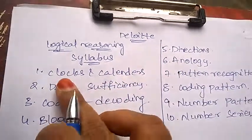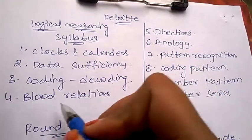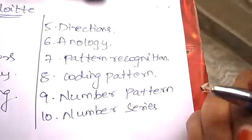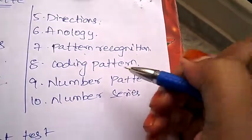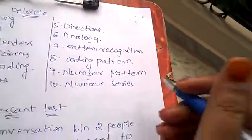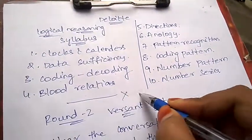asking you questions on clocks and calendars, data sufficiency, coding and decoding, blood relations, direction problems, analogy, pattern recognition, coding pattern, number pattern, and number series. This is the end of Round 1, and once you get selected